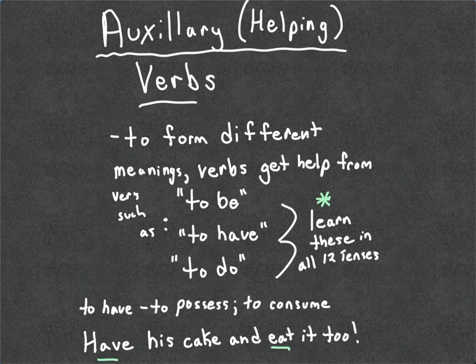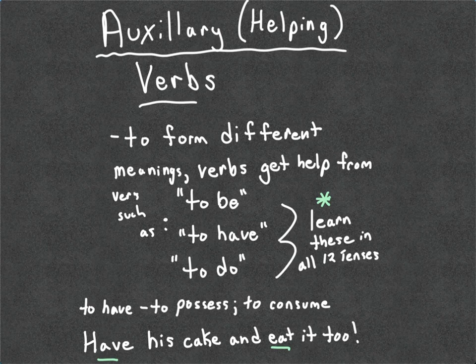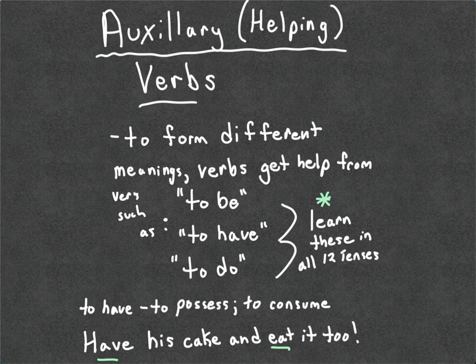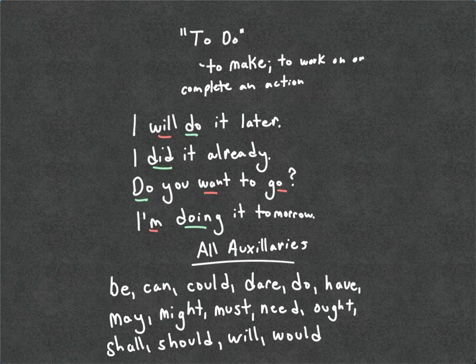English language learners get quite tripped up with the concept of "to have" in English, because the same words can have multiple meanings. "To have" can mean to possess or own something, but it can also mean to consume. "I'm going to have dinner." "I had a Coca-Cola." We also have the curious English expression "to have his cake and eat it too" — he's talking about the impossibility of possessing a cake AND eating it. You can't have both — either you have this beautiful cake to look at, or you eat it.